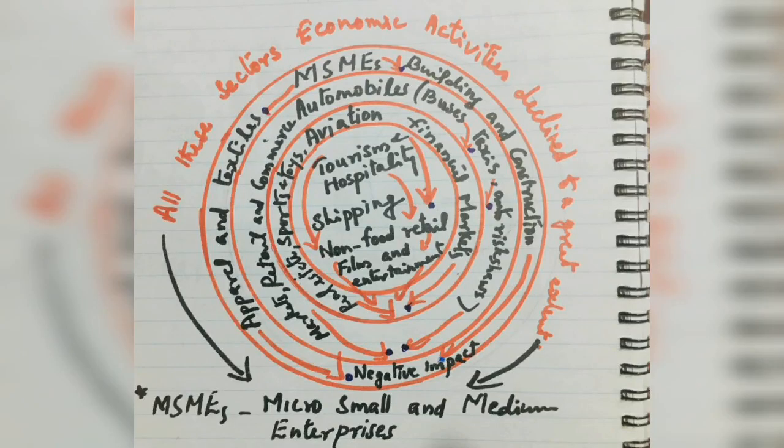Let us focus on the economic impact of COVID-19. We can see all the following sectors economic activities declined to a great extent. Some of them are MSMEs, automobiles, aviation, tourism and hospitality, shipping, non-food retail, film and entertainment, apparel and textiles, building and construction, market, retail and commerce, real estate, sports, toys, financial marketing and so on.